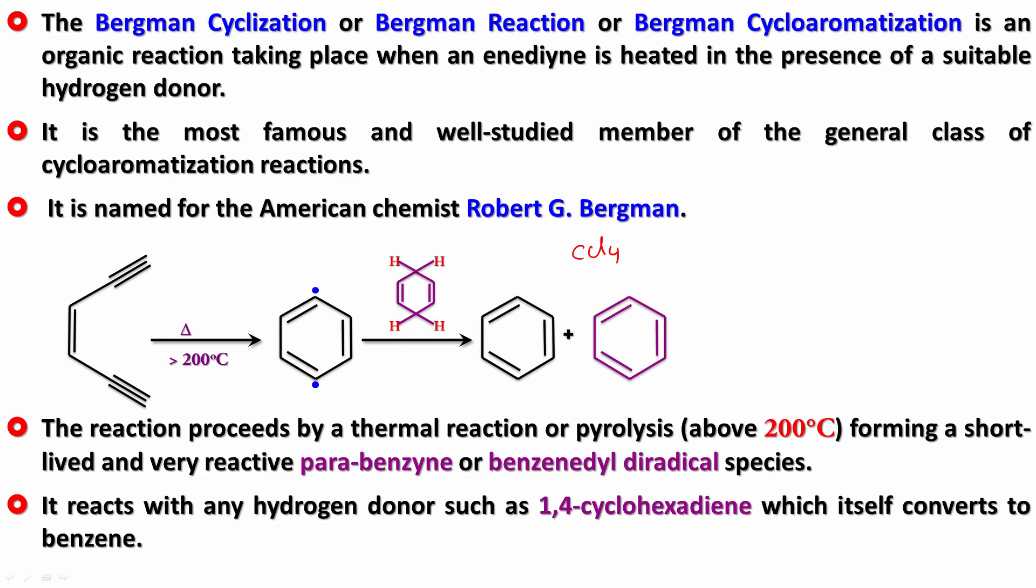Instead of reacting with hydrogen donor, if we were to react it with CCl4, tetrachloromethane, since this doesn't have any hydrogen in it, it is only capable of giving a chlorine atom. You will have two chlorine atoms sitting here. You get 1,4-dichlorobenzene.